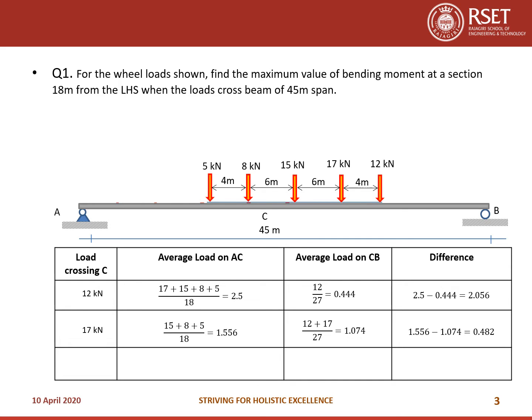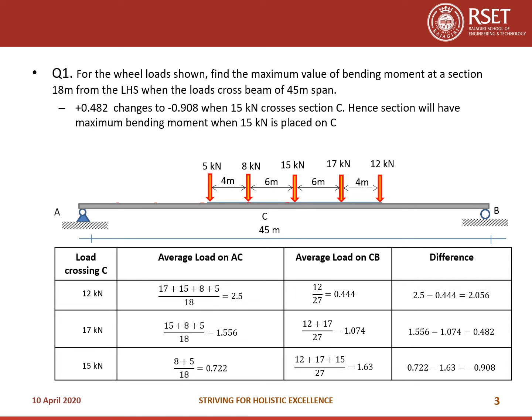In the third case, the 15 kN load also crosses section C. The average load on AC is 8 plus 5 divided by 18, which is 0.722. On CB it is 1.63. The difference is minus 0.908. So when the 15 kN load crosses, the difference changes from plus 0.482 to minus 0.908. Hence, the section will have maximum bending moment when the 15 kN load is placed on C.